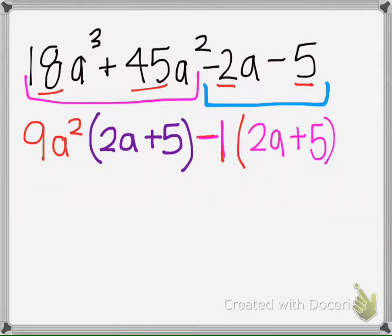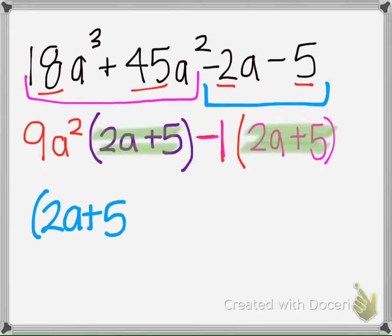So we have successfully made this match. When that matches, we're going to factor out the 2A plus 5, so we're going to bring one of them down. And then we're going to put the 9A squared with the negative 1.